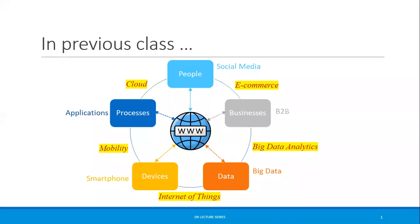In earlier discussions we talked about the evolution of enabling technologies which led to the digital revolution. The digital economy is a result of intersections over the internet between its primary participants — people, businesses, data, devices, and processes. For example, when people and processes intersect on the internet, the concept of cloud evolved. The key enablers of the digital economy are the explosion of data, IP-centered platforms, abundance of bandwidth, and proliferation of smart devices.